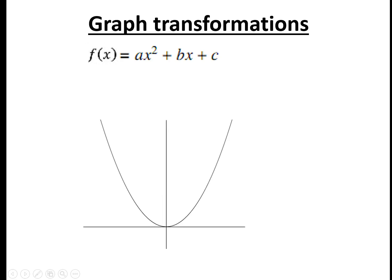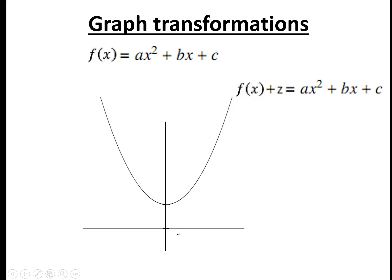So just a reminder of what the original graph looks like. And then if you do f of x plus z, then it moves up by a distance z. So you're just adding z onto it. So the only term that will change by adding z onto it will be this term and c's the intersection point. So it moves up by z. It goes from intersecting at c to intersecting at c plus z.